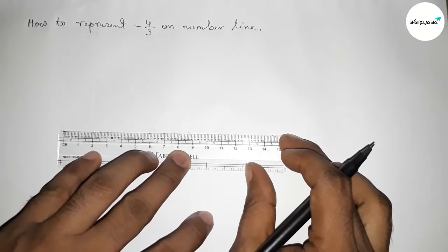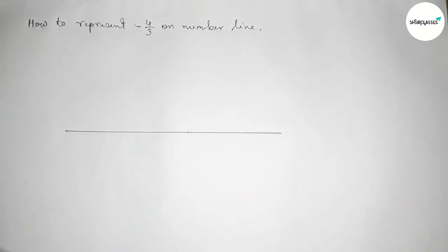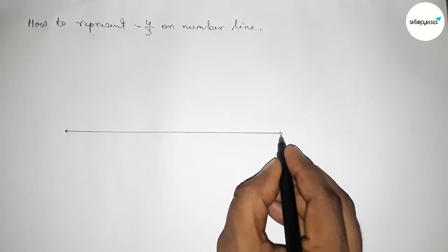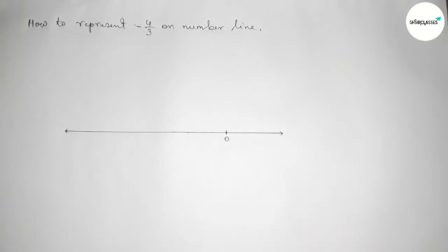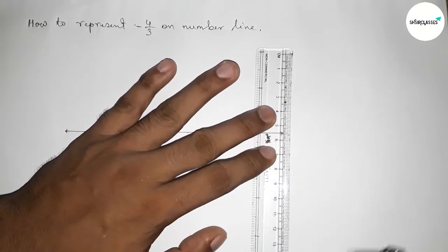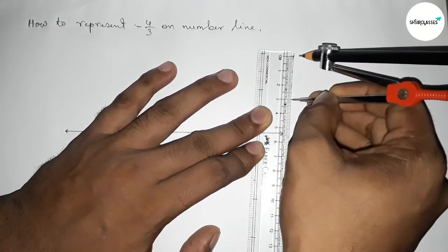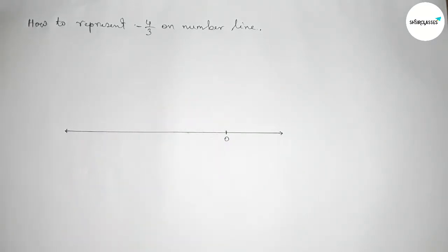First of all we have to construct a number line here. Drawing a line of any length and taking arrow marks on both sides, then marking the number zero. Now I'm going to use a scale and take a length of three centimeters using a compass — three centimeters is used here for easy calculation. You can take two centimeters or any length to mark the numbers on the line.